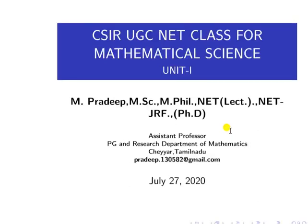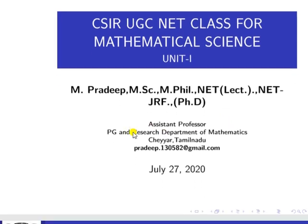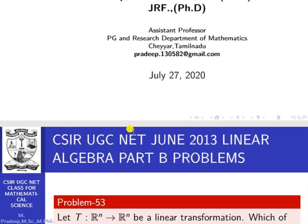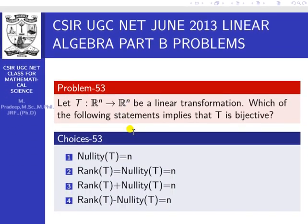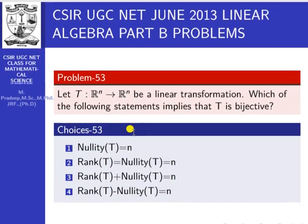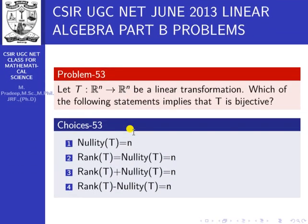Good morning to everyone. Today we are going to discuss CSER UGC NET June 2013 linear algebra Part B problems — just four problems. The first problem, problem number 53.